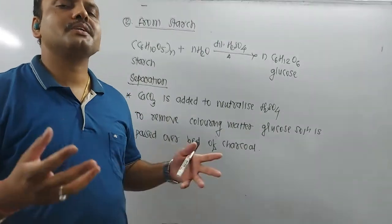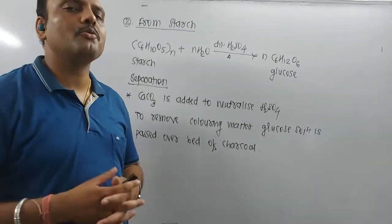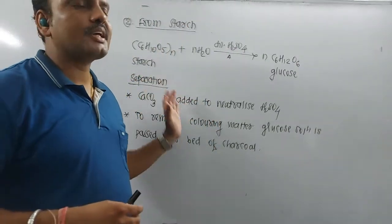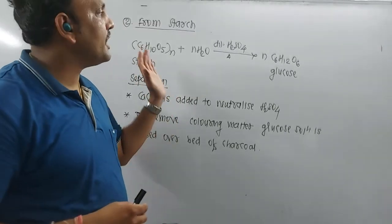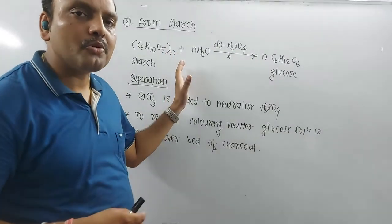And on cooling, crystals of glucose separate out. And remember, that glucose is packed and sold in the market. Remember, this is the large scale production of glucose, and remember, it happens to be the commercial method to prepare glucose.